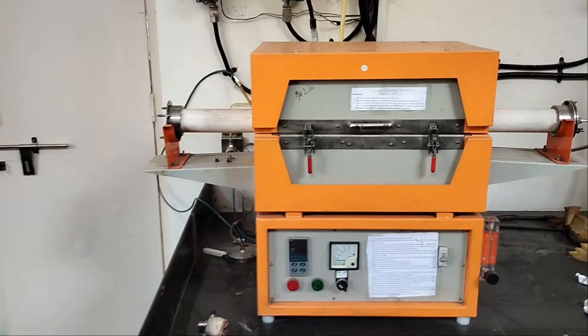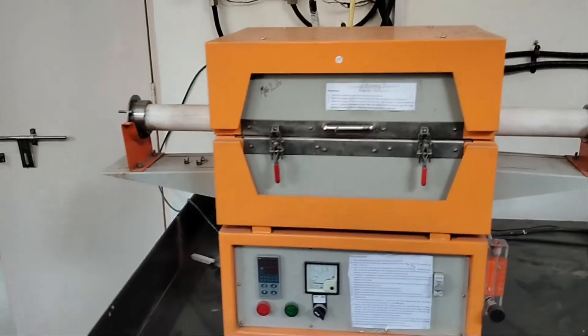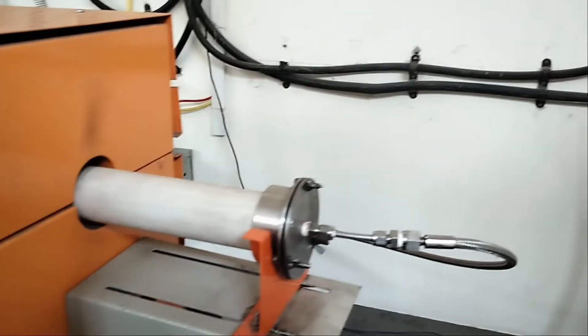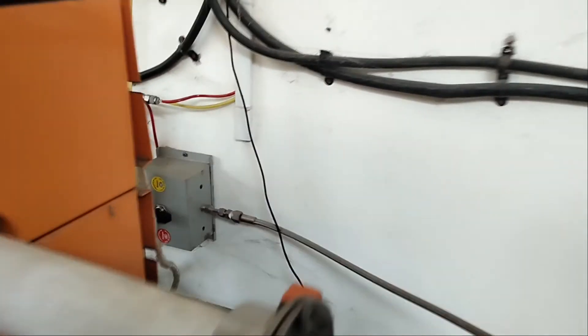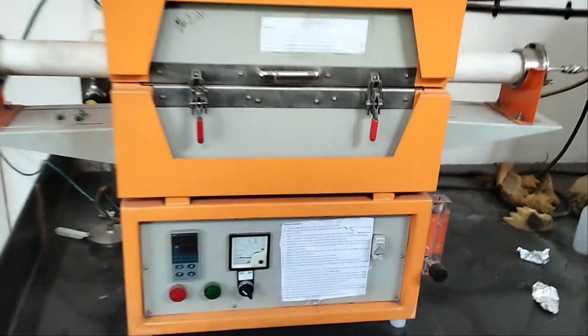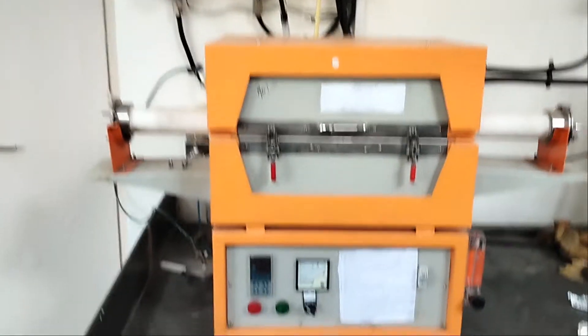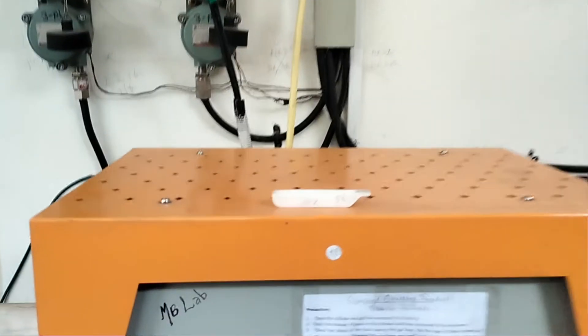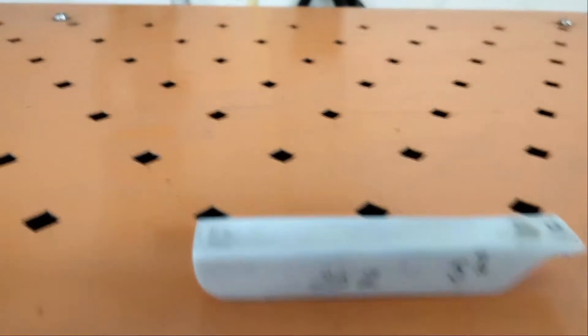This is a tube furnace which can go up to 1200 degrees Celsius. It is a long tube kept inside an oven. We will take the sample in an alumina board, and this is the alumina board.